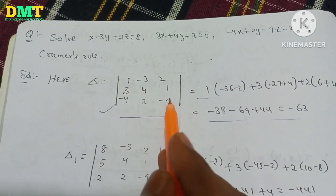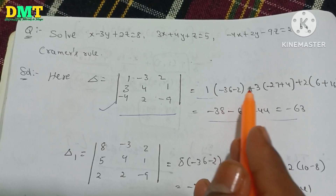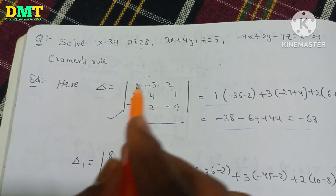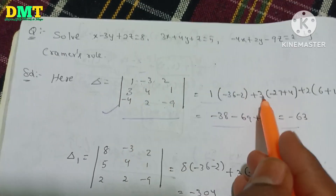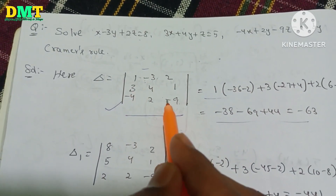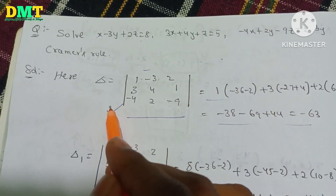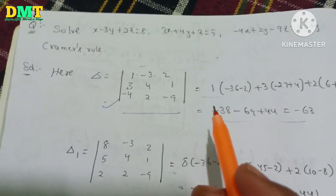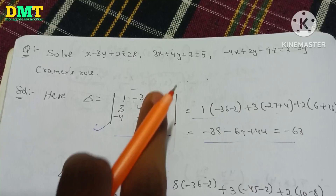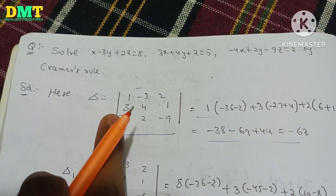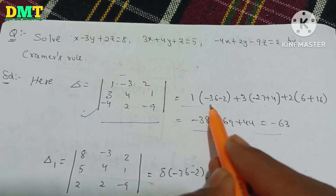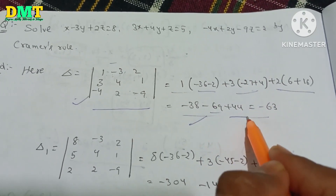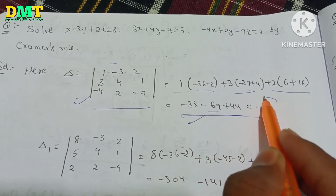We find out the determinant. 1 into 4 times 6 minus 2 times 1 equals 2. Plus minus of minus 3 into 3 plus 3. 3 into 9 is 27, minus. Minus of minus 4, so 4 times 1 is 4. The determinant value: 3 times 2 is 6, minus into minus is plus, 4 times 2 is 16. So minus 38, minus 69, plus 44.